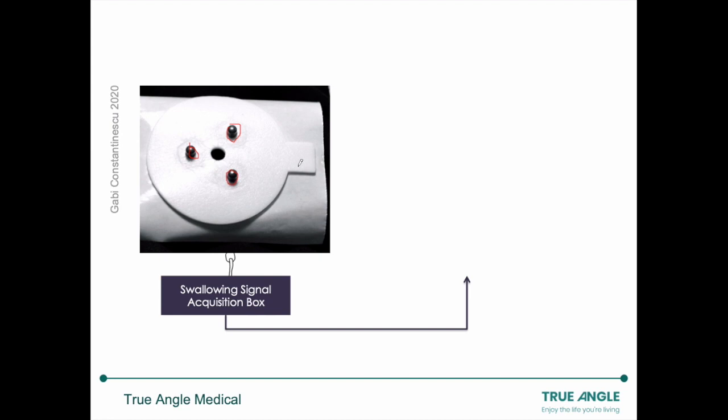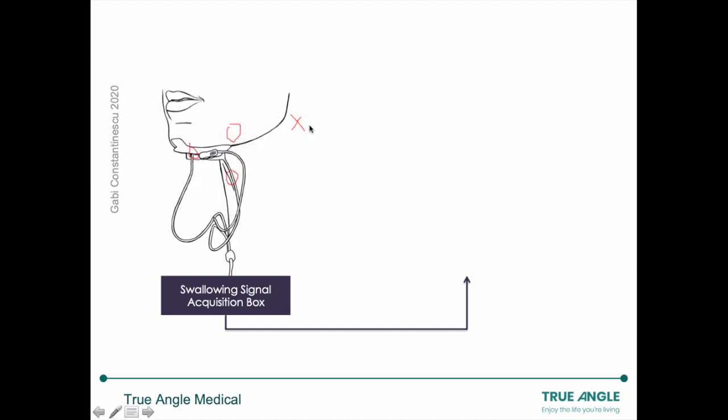So what happens is once you detach this sticker backing and attach the sensor sticker to the patient's chin, you will then use three alligator clips that connect these sensors and the information captured from them to the swallowing signal acquisition box.